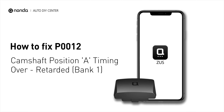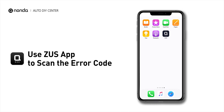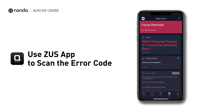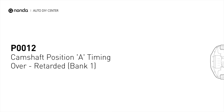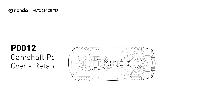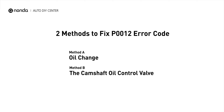If you are getting a P0012 error code, this video is going to show you two practical solutions to fix the error code at home. Use the Zeus app to scan your vehicle and see the error code P0012. It indicates the ECM has determined that the intake camshaft timing for Bank 1 is more retarded than what the ECM has commanded it be. Here are two simple DIY methods you can try to solve this problem.